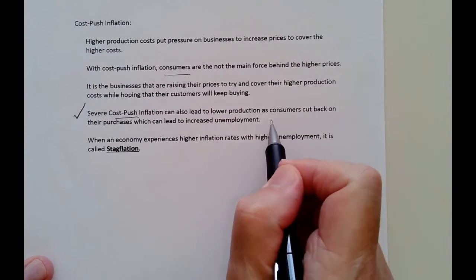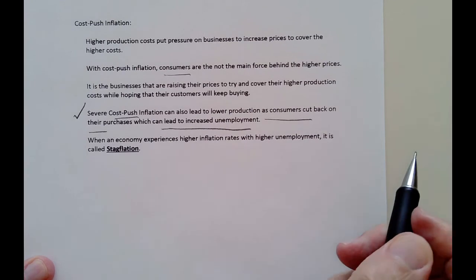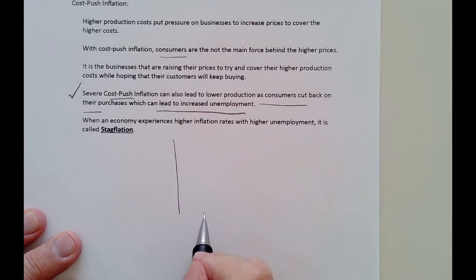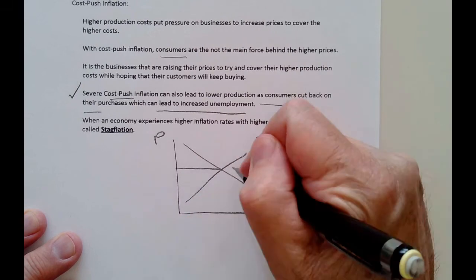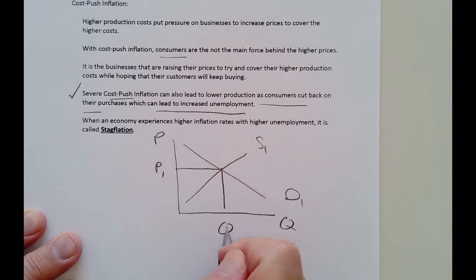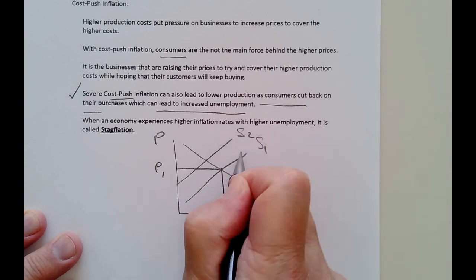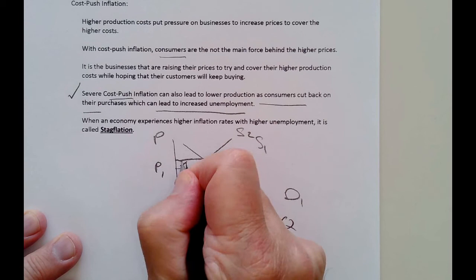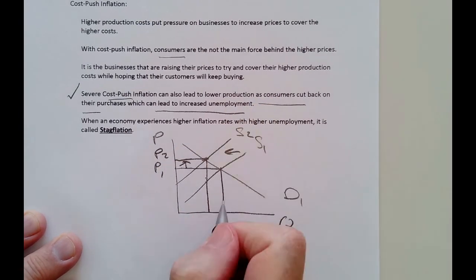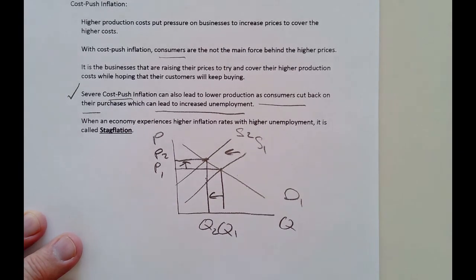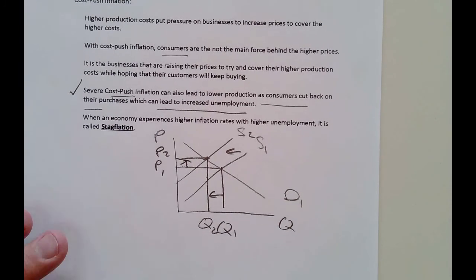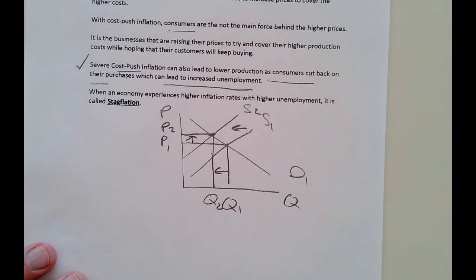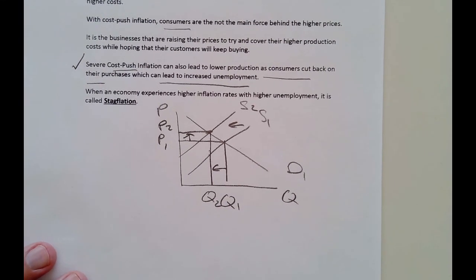Severe cost-push inflation can lead to lower production as consumers cut back, which leads to higher unemployment — a double whammy. On the supply and demand diagram, this is caused not by demand but by supply. Supply decreases and shifts to the left — that's cost-push inflation. You get higher prices, but you also get lower output. At least with demand-side inflation you get higher output and more jobs with a slight increase in demand. Slight inflation does not destroy your currency. Hyperinflation can destroy it. If this happens across the entire economy — most markets — then it becomes a big deal. That's what we had in the 1970s.